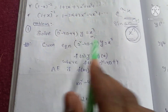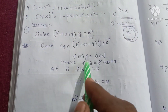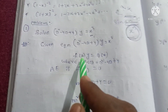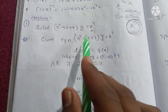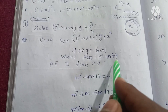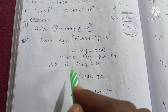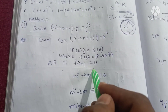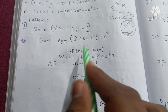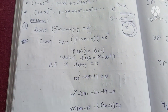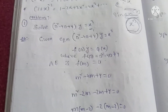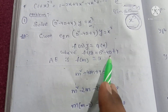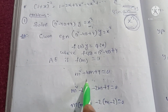Therefore, for the given equation f(D)y = Q(x), where f(D) = D² - 4D + 4, we write the auxiliary equation: f(m) = 0. Substituting D with m: m² - 4m + 4 = 0.